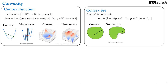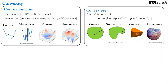We can also define convexity for sets. A set is convex if for any pair of points x and y, the segment going from one point to the other lies completely within the set. In a non-convex case, we can find a pair of points for which the corresponding segment lies outside the set. Examples include the positive semi-definite cone as a convex set and a non-convex set.